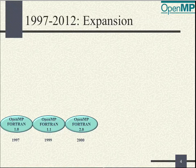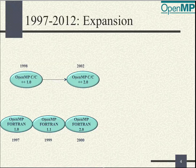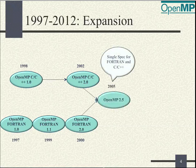The original vendors are listed on this slide. SGI, Cray, and KAI got together under influence of ASCI to set up the standard set of directives. DEC, IBM, and Intel joined them when the OpenMP organization was set up in 1997.